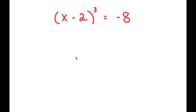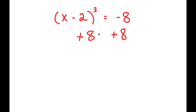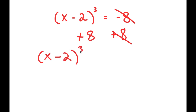In this problem, I have (x minus 2) to the power of 3 is equal to negative 8. To solve this, I'm going to first start by adding 8 on both sides. These two cancel out, and I get (x minus 2) to the power of 3 plus 8 is equal to 0.